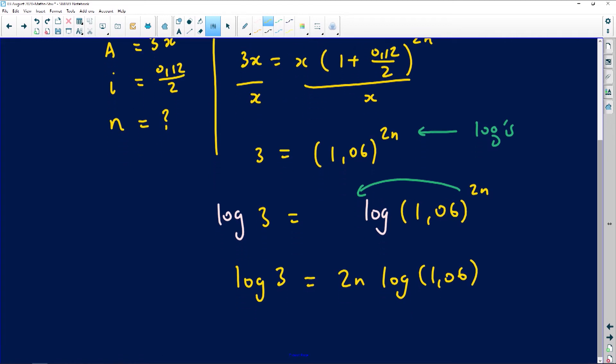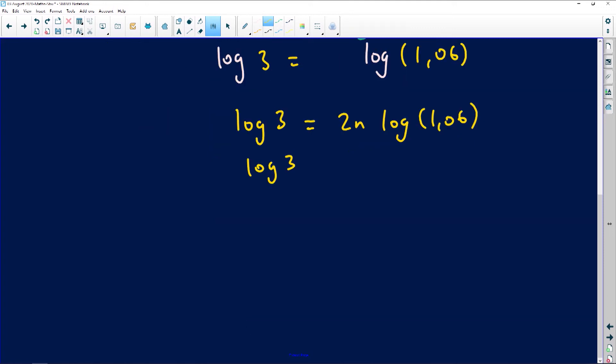After this you can divide both sides by log 1.06. You're going to get log of 3 divided by the log of 1.06 equals 2n. You can simply write it as log base 1.06 of 3 if you combine the two. We don't like writing too many logs as mathematicians—we prefer having exactly only one log. Then you divide both sides by 2, so the answer here is going to be n equals the logarithm base 1.06 of 3 divided by 2.